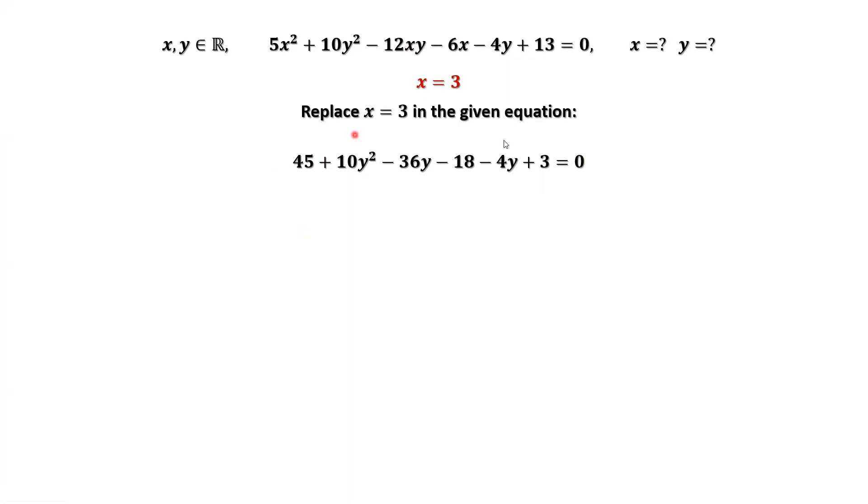Continue to simplify the left-hand side. We have 10y² - 40y + 40. Both sides divided by the common factor 10. We have y² - 4y + 4. The left-hand side is a complete square, which is (y - 2)² = 0. This implies y = 2.